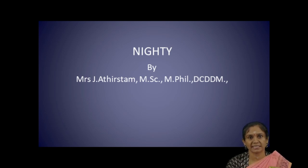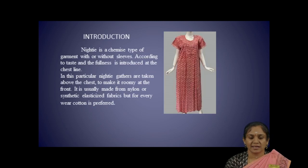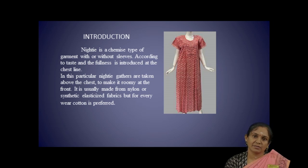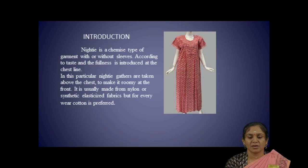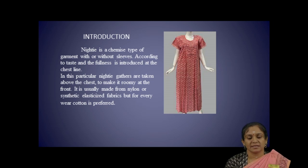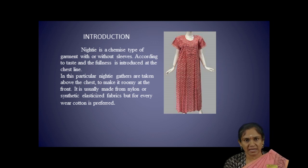Our today's topic is Naiti. Naiti is a chemist type of garment, with or without sleeve. According to the taste, the fullness is introduced. For this garment, we introduce fullness at the chest line, and in addition to that we have to add gathers. This garment is made up of fabrics like cotton and synthetic materials.